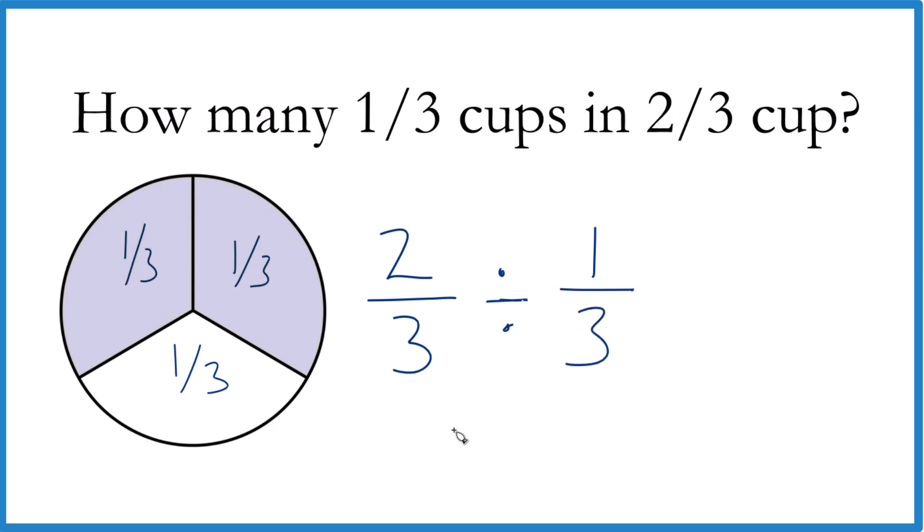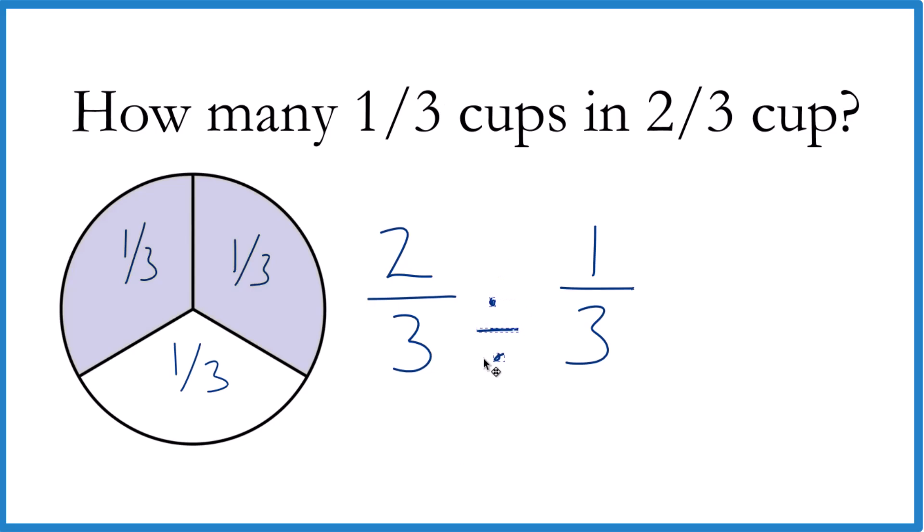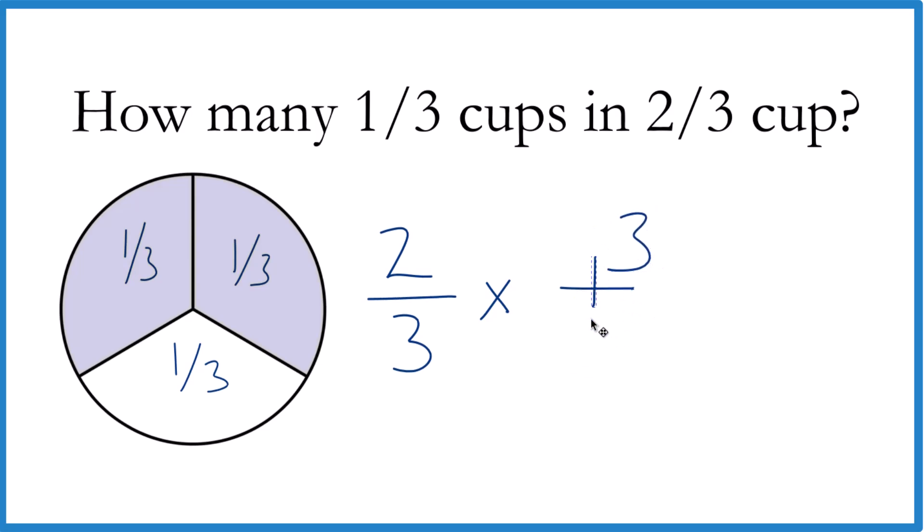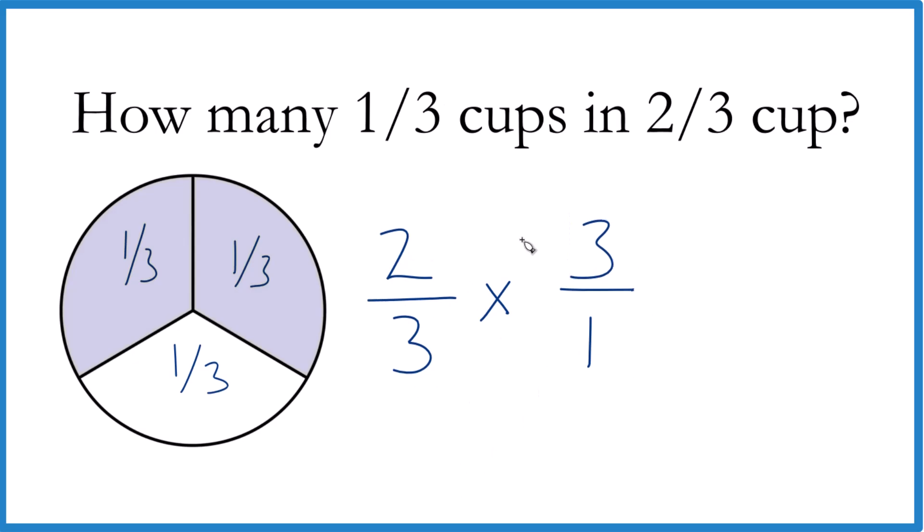When we're dividing fractions, usually what we do is we don't use division, we use multiplication and multiply by the reciprocal. So we move the three up here and the one down here. Instead of one-third, we have three over one, and that's just a lot easier to deal with. We can take two times three, that equals six, and three times one equals three.